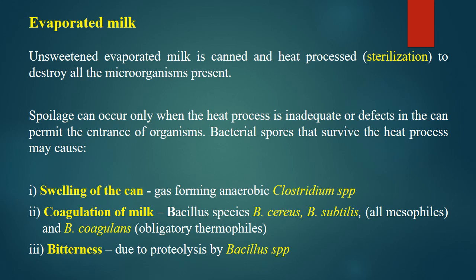Now we will discuss the spoilage of evaporated milk. In this product, the major part of moisture is removed and milk is concentrated without added sugar. Unsweetened evaporated milk is generally canned and heat-processed for sterilization to destroy all microorganisms. Once sterilized and canned, it can stay for a long time. Spoilage can occur only when the heat process is inadequate or defects in the can permit the entrance of organisms. If sterilization is insufficient or improper, or organisms enter through some passage, bacterial spores surviving the heat process may cause spoilage.